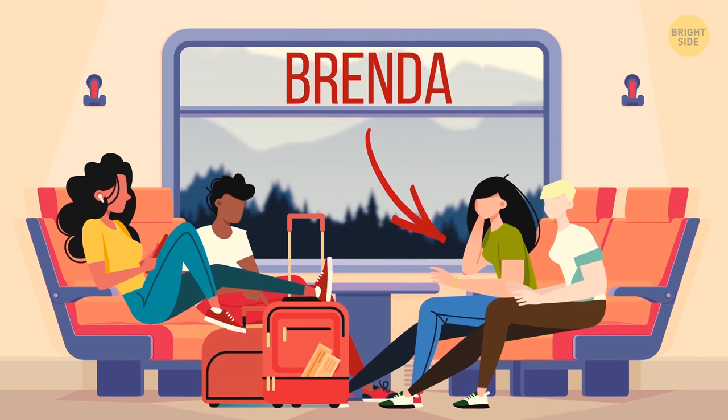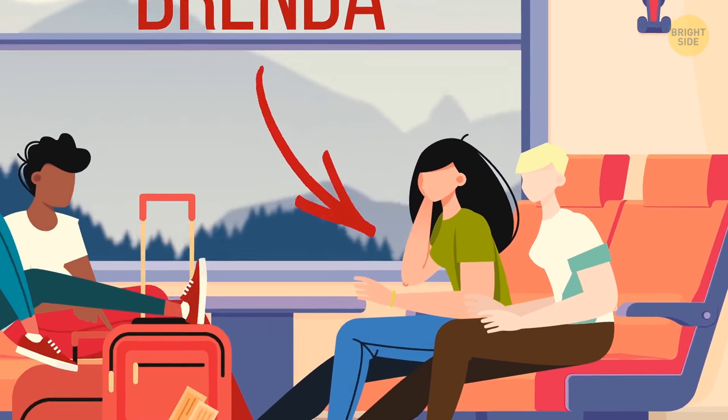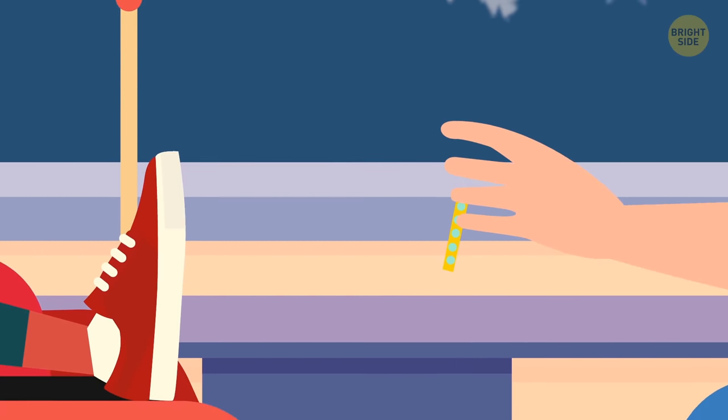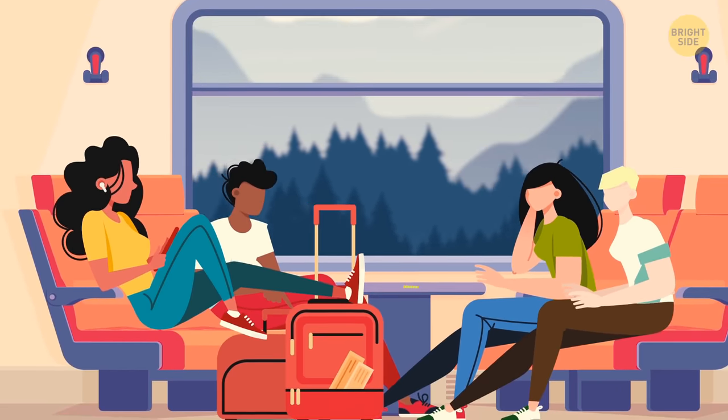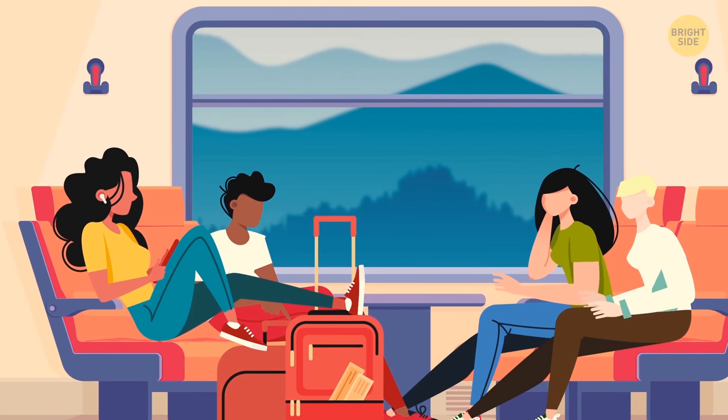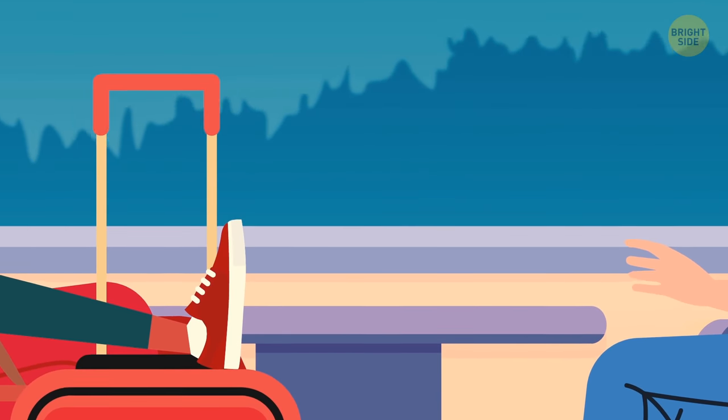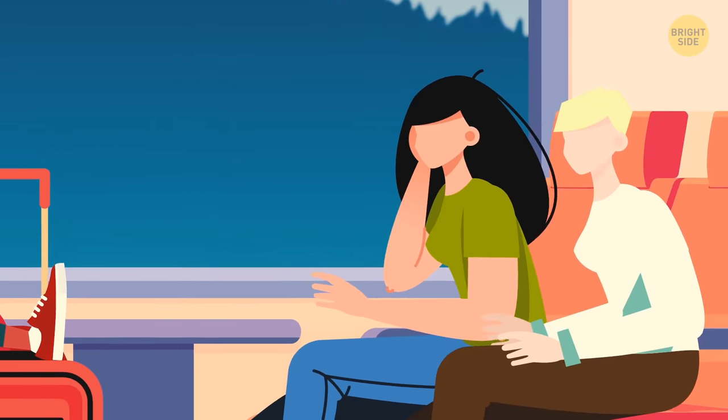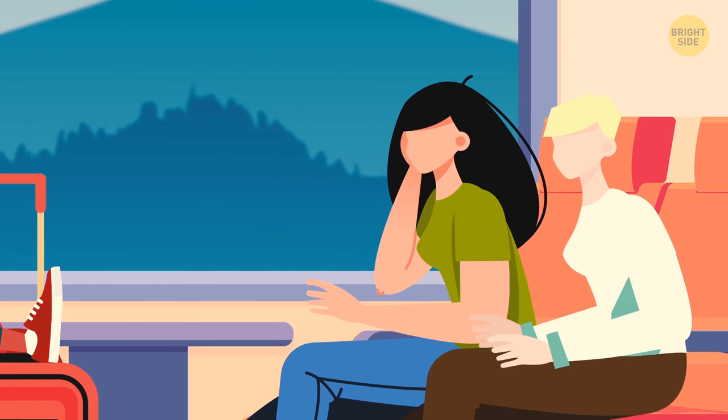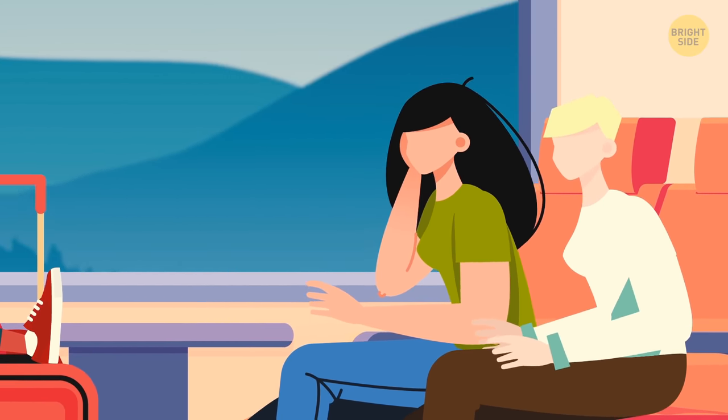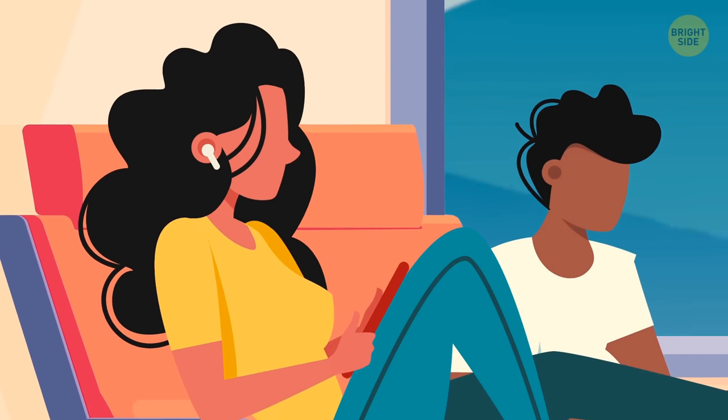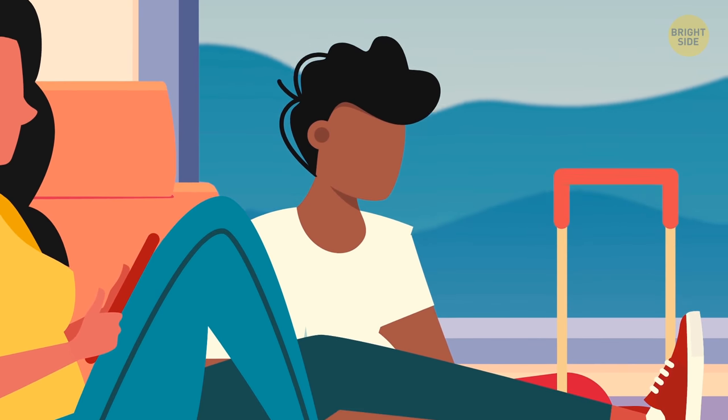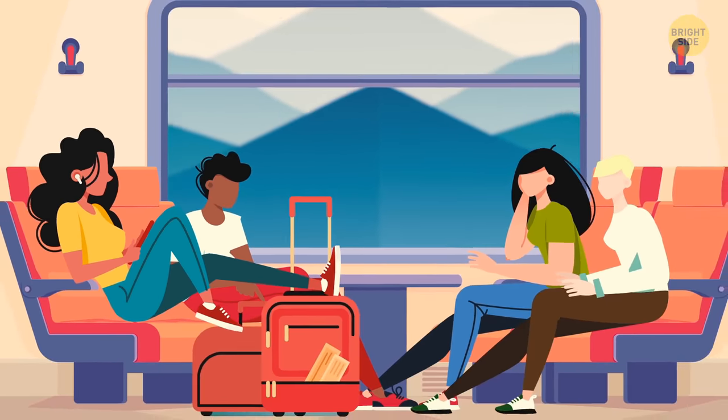Brenda was traveling by train. It was scorching hot in the carriage. The girl took off her gold bracelet decorated with diamonds and put it on the table in front of her. Several minutes later, the train entered a tunnel, and it got pitch dark. When the tunnel was left behind, there was no bracelet on the table. Brenda was shocked. Someone's taken my bracelet. There were just three other people in the compartment. Helen said she'd been sleeping. Rachel was reading a book on her phone. And Gregory had gone to the bathroom even before the train entered the tunnel. Who took the bracelet?